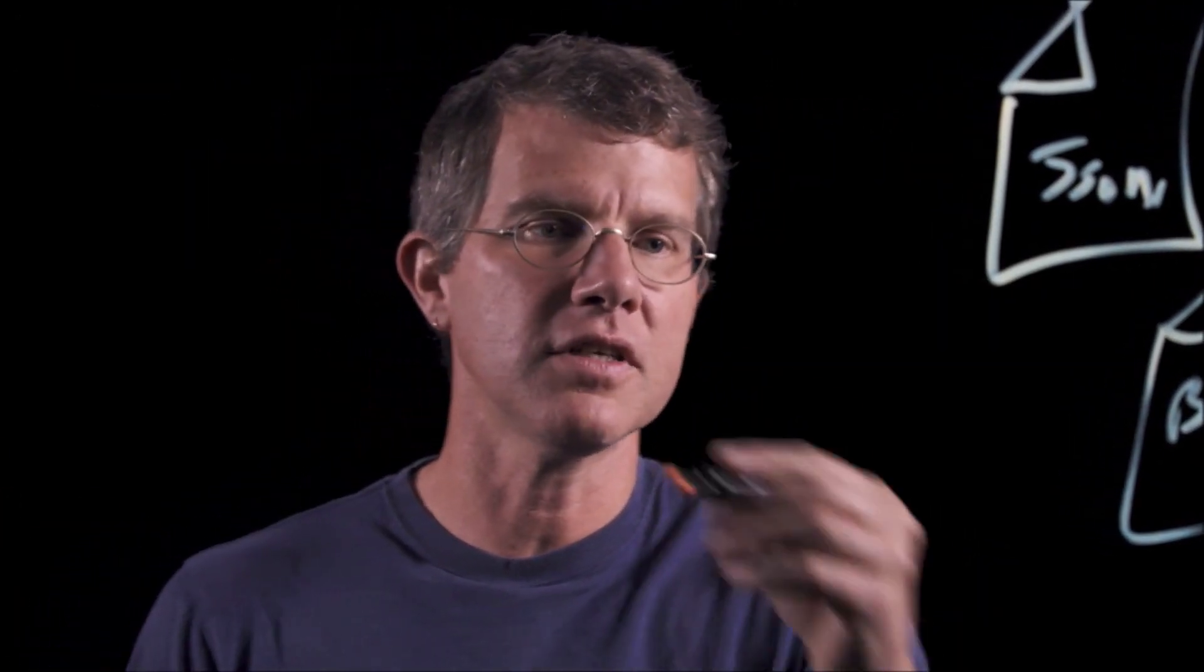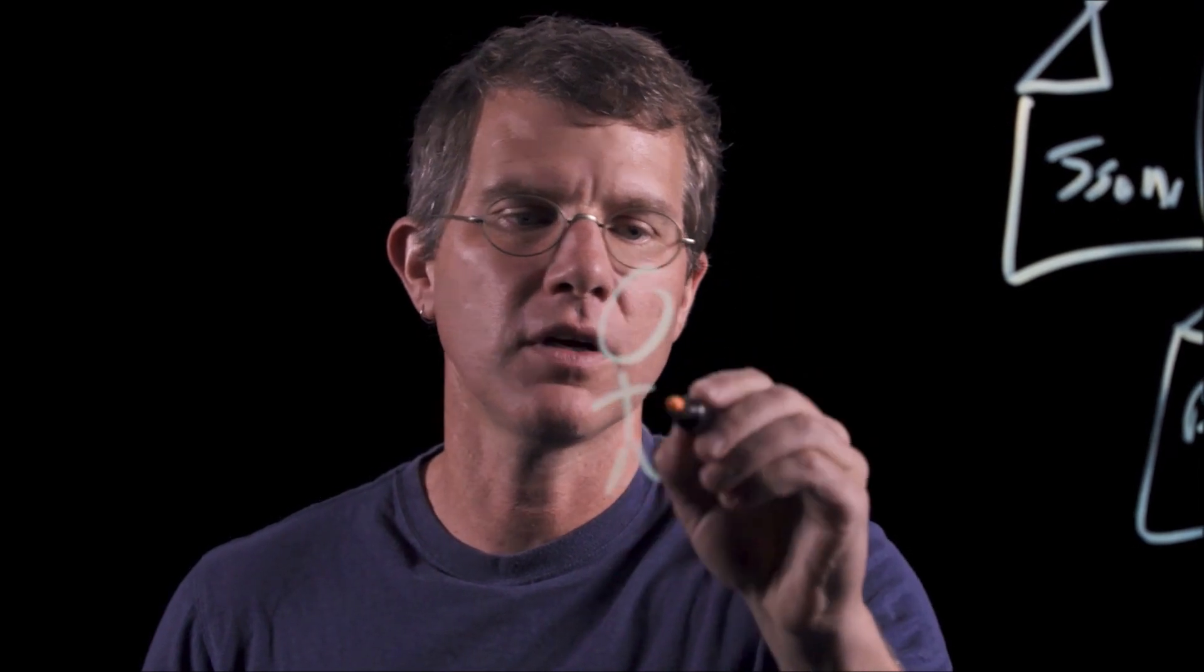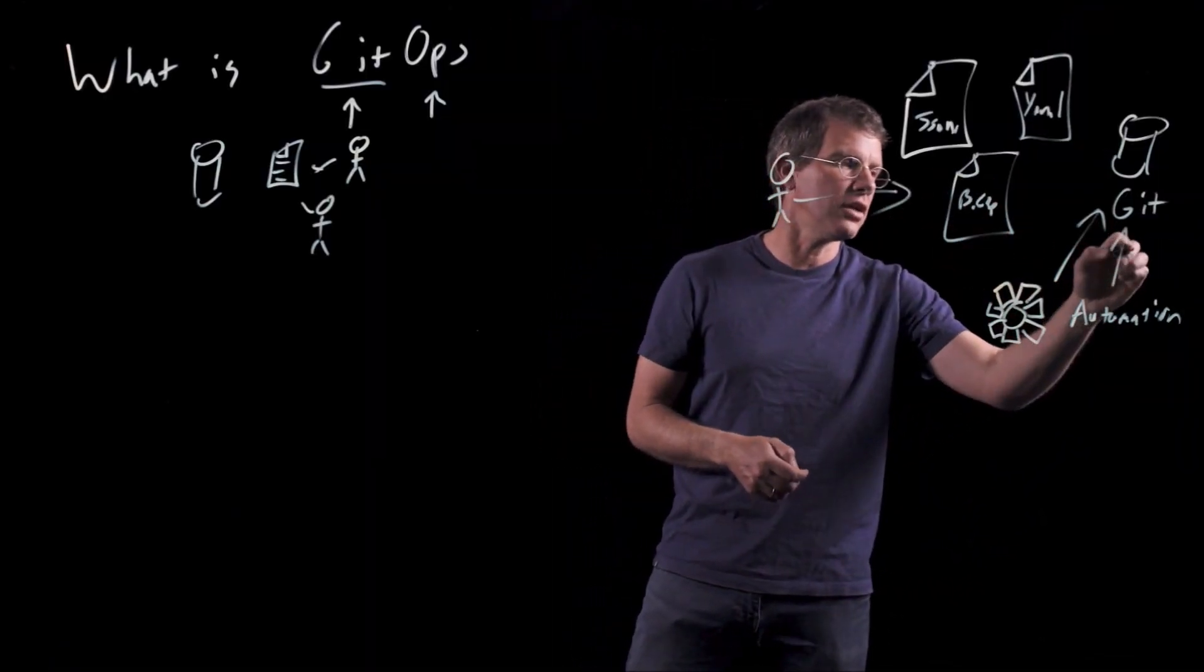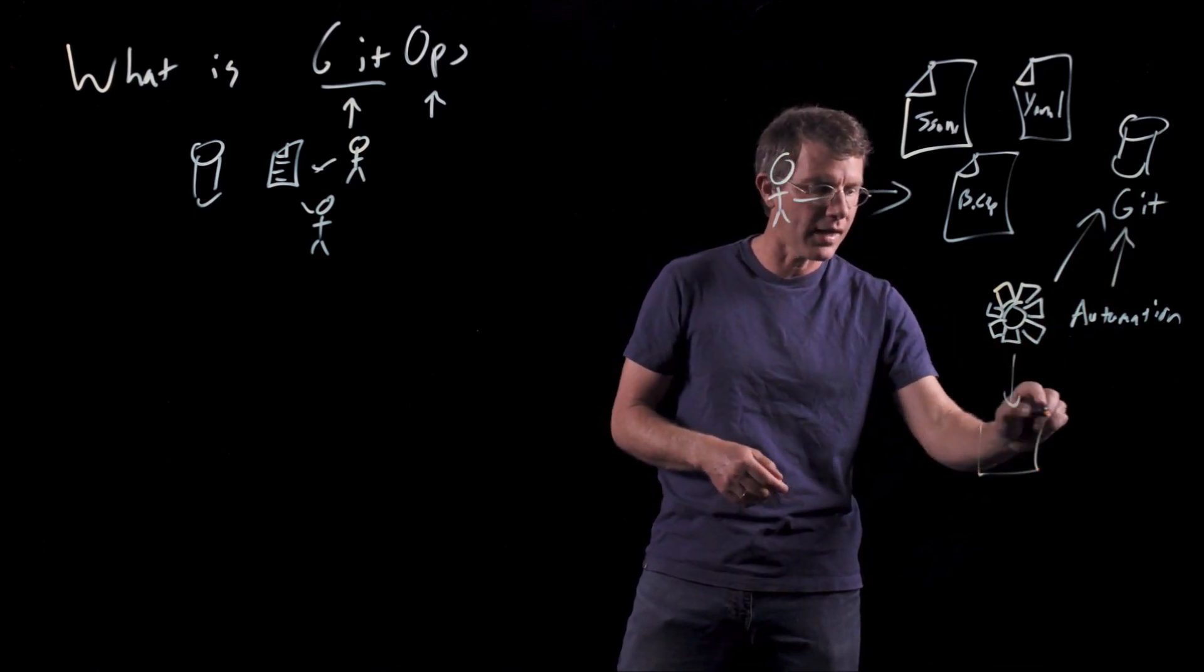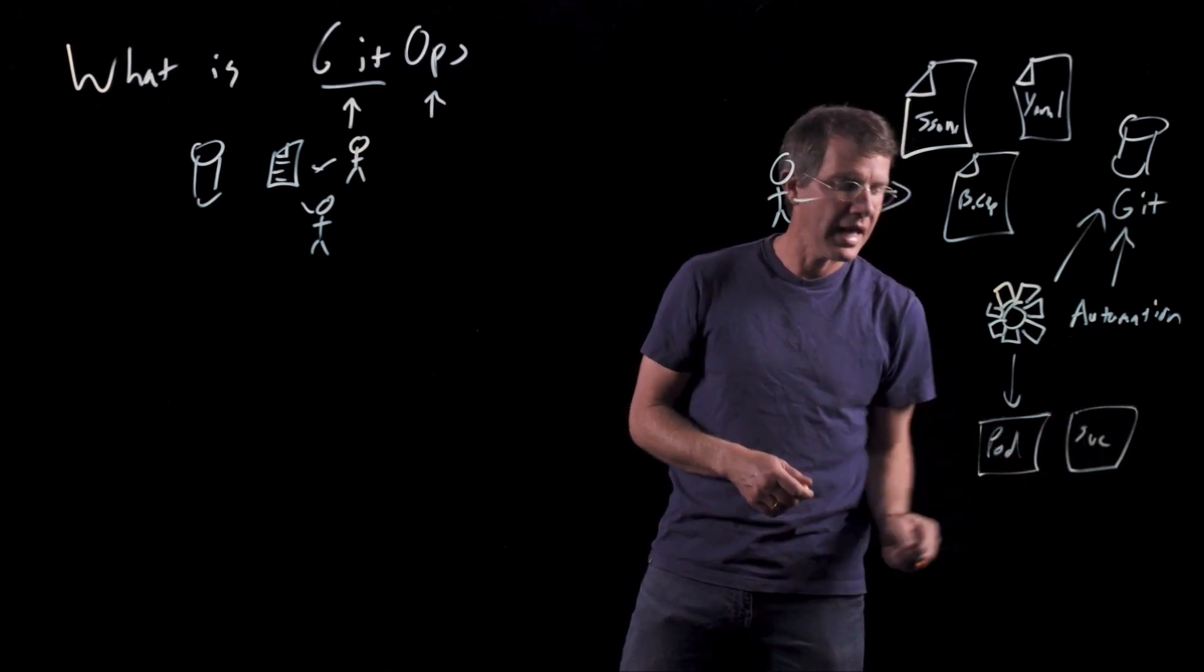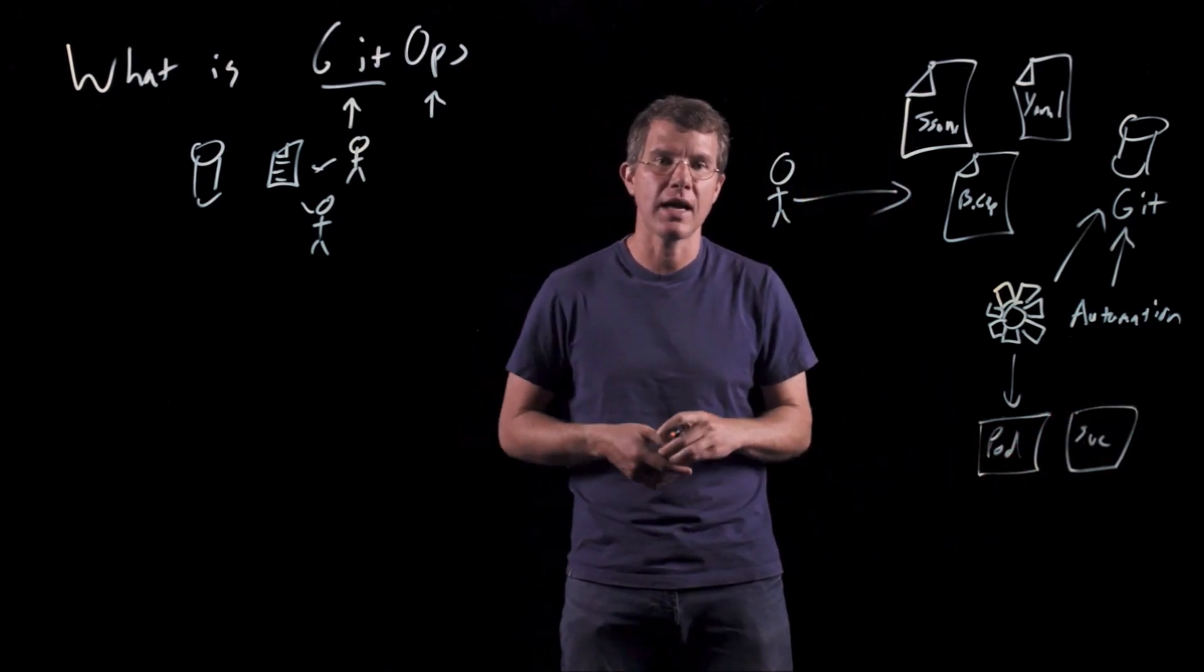And the net effect of that is every single time you push a new configuration into that Git repository, the automation is also going to notice that, and it's going to take an action. It's going to create a pod or a service, and it's going to deploy your application out to the cluster.